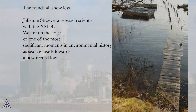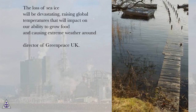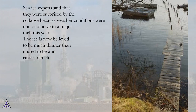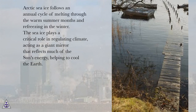We are on the edge of one of the most significant moments in environmental history as sea ice heads towards a new record low. The loss of sea ice will be devastating, raising global temperatures that will impact on our ability to grow food and causing extreme weather around the world, said John Sauven, director of Greenpeace UK. Sea ice experts said they were surprised by the collapse because weather conditions were not conducive to a major melt this year. The ice is now believed to be much thinner than it used to be and easier to melt. Arctic sea ice follows an annual cycle of melting through the warm summer months and refreezing in the winter. The sea ice plays a critical role in regulating climate, acting as a giant mirror that reflects much of the sun's energy, helping to cool the earth.